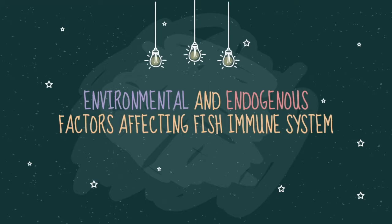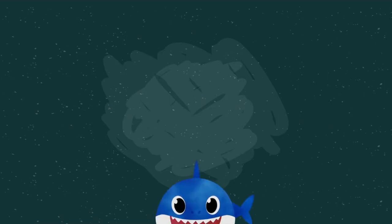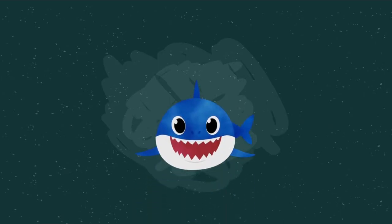Hello everybody, we are from group Thrombocytes and we will talk about environmental and endogenous factors affecting the fish immune system. This is Nawal, she is a healthy fish. Do you know what will happen to her when environmental and endogenous factors affect her immune system?